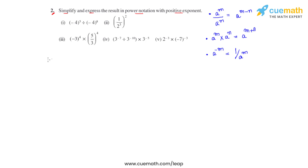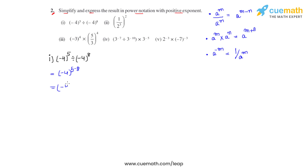The first problem says negative 4 raised to 5 divided by negative 4 raised to 8. The bases are the same and they're in division, so the powers must get subtracted. We write this as negative 4 raised to 5 minus 8, which gives us negative 4 raised to negative 3.